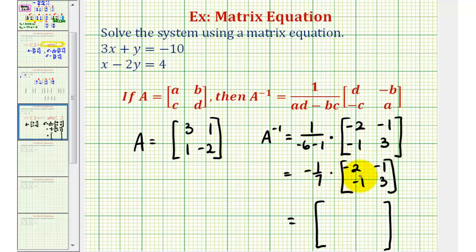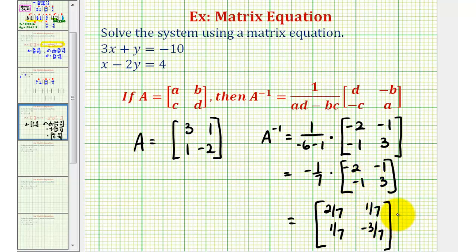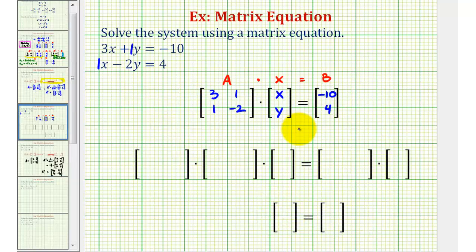Let's go ahead and perform this scalar multiplication, so we'll have two-sevenths, one-seventh, one-seventh, and negative three-sevenths. Now we're going to multiply both sides of our matrix equation by A inverse in order to solve for matrix X, which will give us the solution to our system.